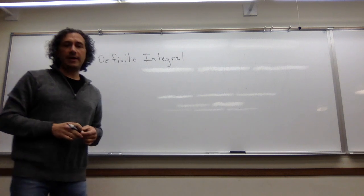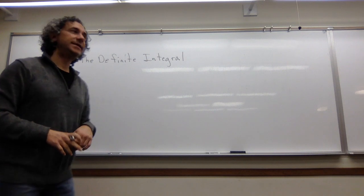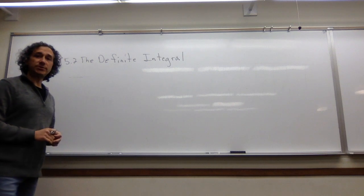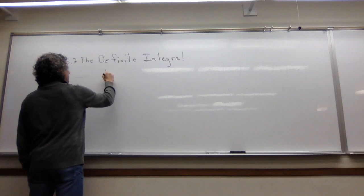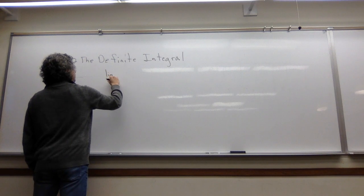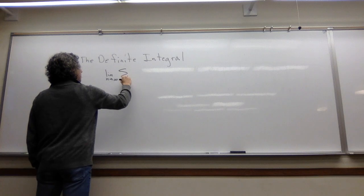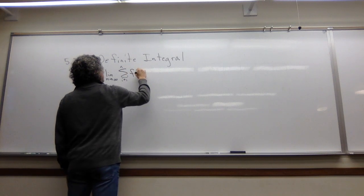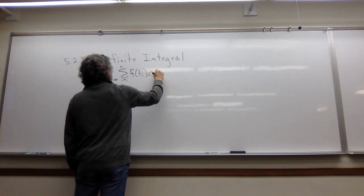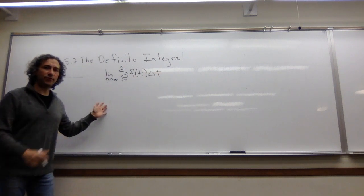So what I'd like to do is come up with some special notation for the limit as n goes to infinity of the sum as i goes from 1 to n of f of t sub i delta t. What is this expressing for us?